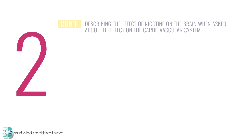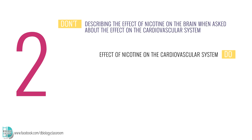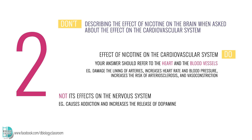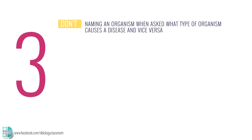Number two: describing the effect of nicotine on the brain when asked about the effect on the cardiovascular system. When asked about the effect of nicotine on the cardiovascular system, your answer should refer to the heart and blood vessels. Examples include: it damages the lining of arteries, increases heart rate and blood pressure, and increases the risk of arteriosclerosis and vessel constriction. Its effects on the nervous system, such as causing addiction and increasing the release of dopamine, should not be included.